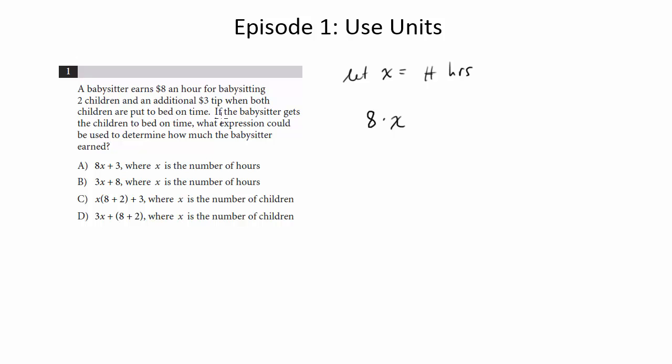We're also assuming that she gets the children to bed on time. So that means she gets this additional $3 tip. So we're going to add the $3 tip to here, and we're going to end up with 8x plus 3 as the expression for how much money she's going to earn in that job. And that's choice A, and that's the answer.